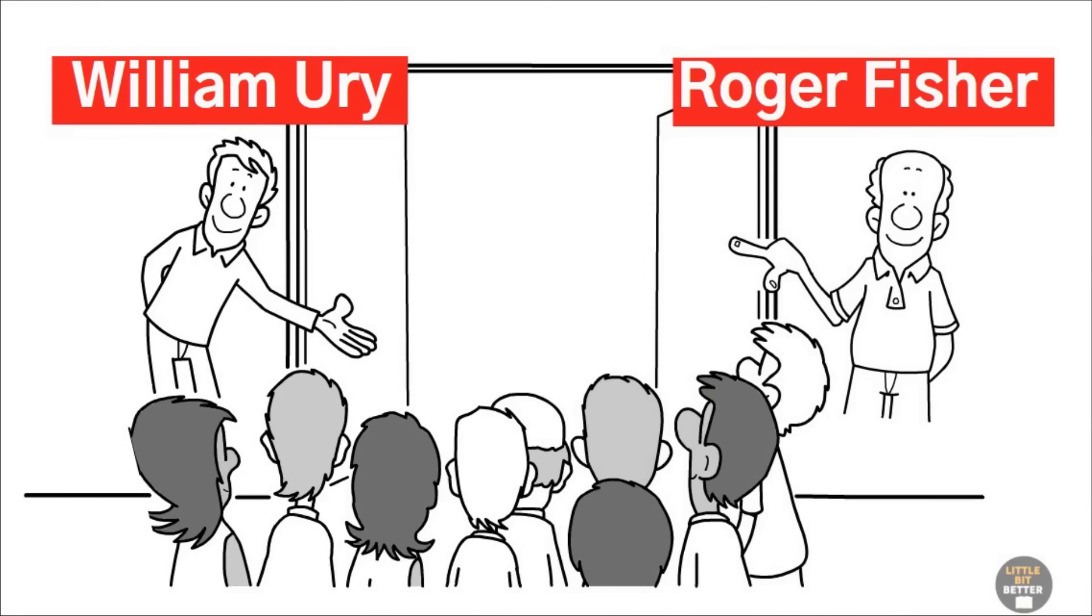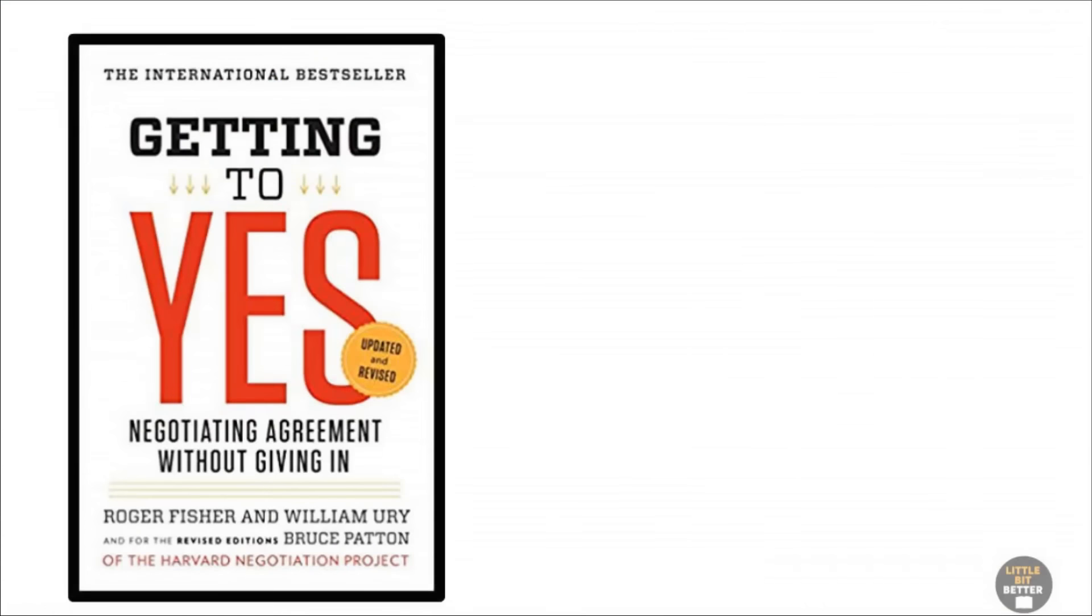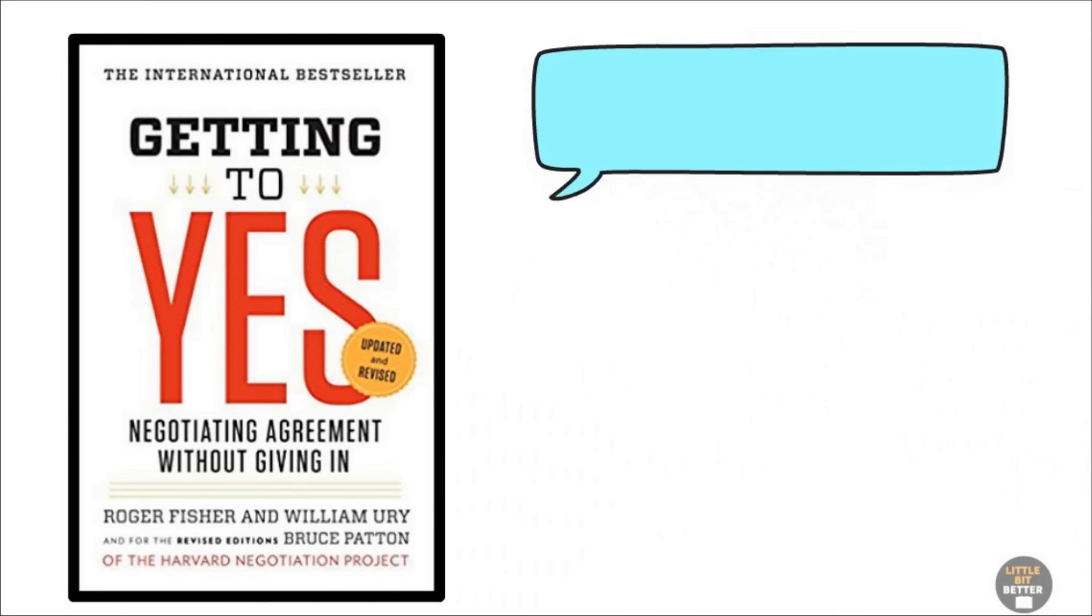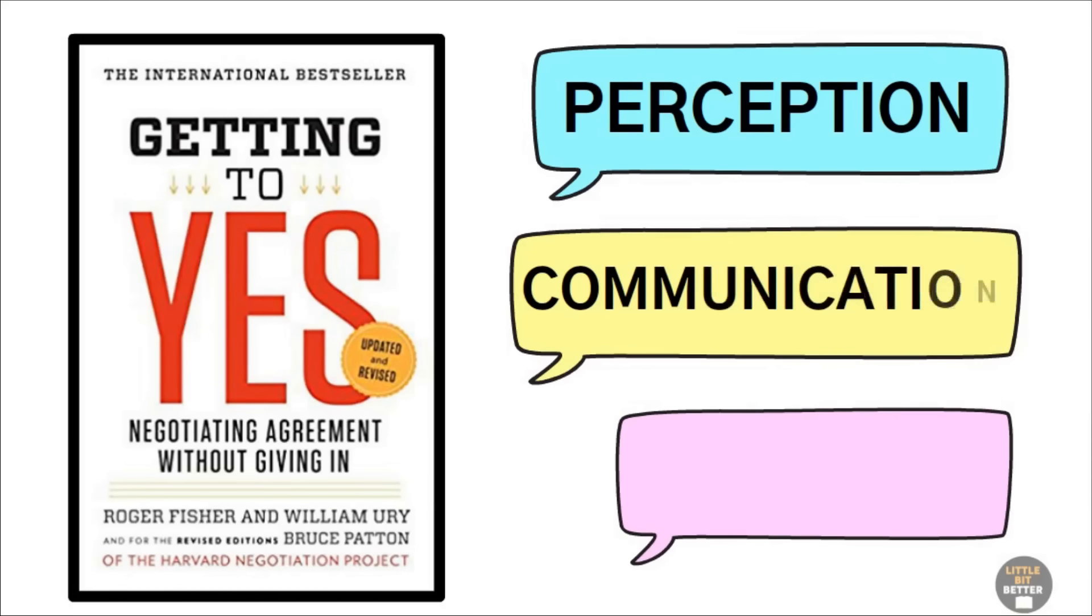William Ury and Roger Fisher are the founders of the Harvard Negotiation Project. In their book, Getting to Yes, the authors explain that the worst mistakes come from one of these three areas: perception, communication, emotion.